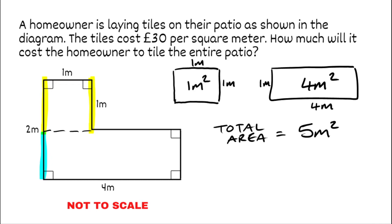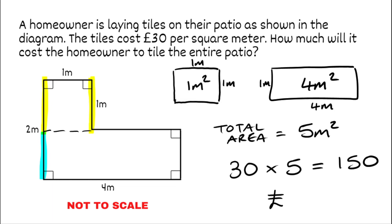Now we apply this to the question. The tiles cost 30 pounds per square meter and the patio is five meters squared, so we do 30 multiplied by five, which gives us 150. The cost to tile the whole patio would be 150 pounds — that's the final answer.